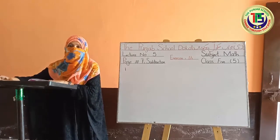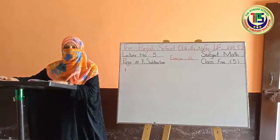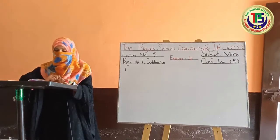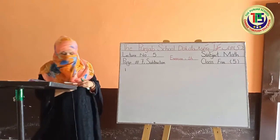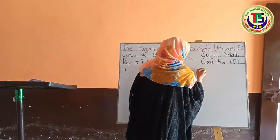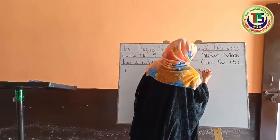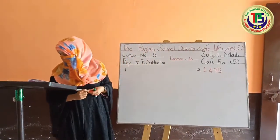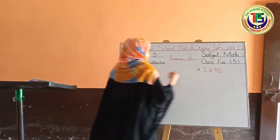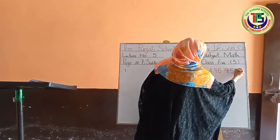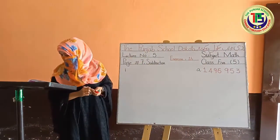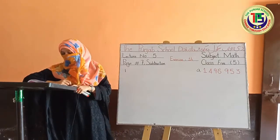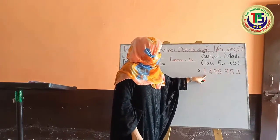What does subtract mean? It means to minus — to take away, to remove one thing from another. Today we start — I will solve one question for you; the rest you will solve yourselves in your book. Whatever you do in the book will be your class work, and what you do in the notebook will also count. Question number A — this is our first number. The second number has digits: 6, then 6, then 6; the first number had 7 digits.